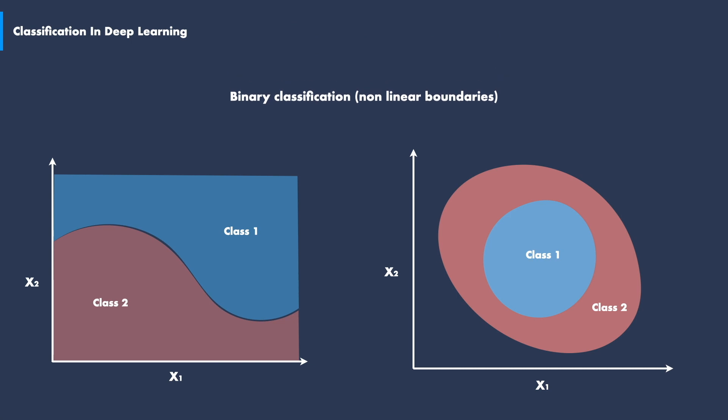Besides binary classification with linear borders, non-linear borders separating the different classes are also a possibility. These two graphical representations show a situation like this. An S-shaped curve separates the two classes in the left-side graph, while a circular border lies in between the two classes in the right-side graph.